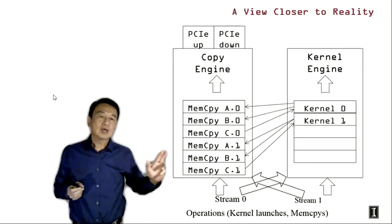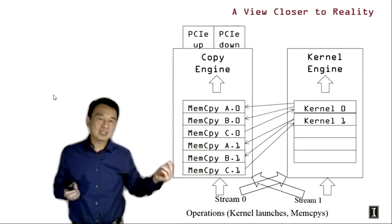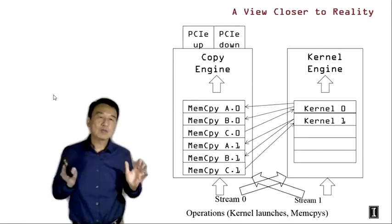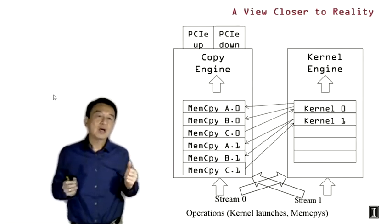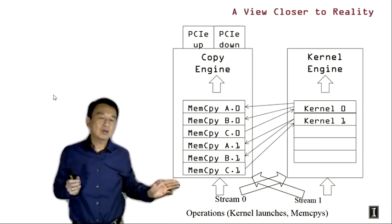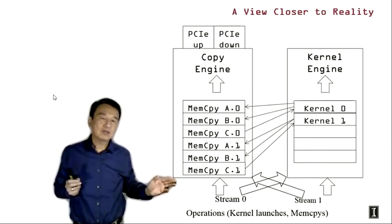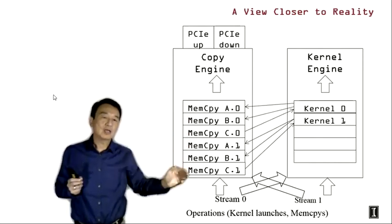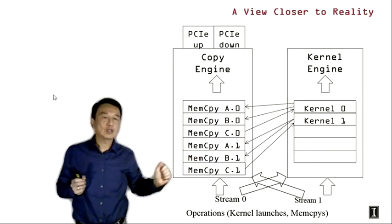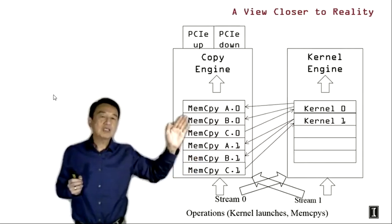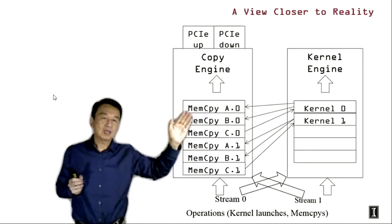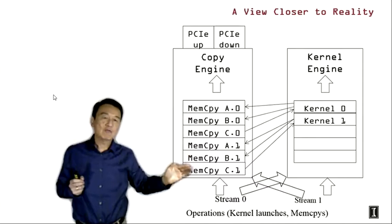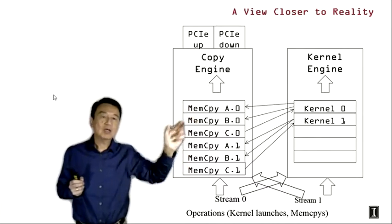When we issue tasks into the conceptual streaming queues in those generations of hardware, memory data transfer tasks enter the copy engine queue and kernel launches enter the kernel engine queue. So we're mixing up the memory data transfer tasks from two different streams — stream 0 and stream 1 — into these shared hardware queues.